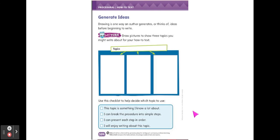Turn the page so you're on page 504. Generate Ideas. Drawing is one way an author generates, or thinks of ideas, before beginning to write. Draw pictures to show three topics you might write about for your how-to text.